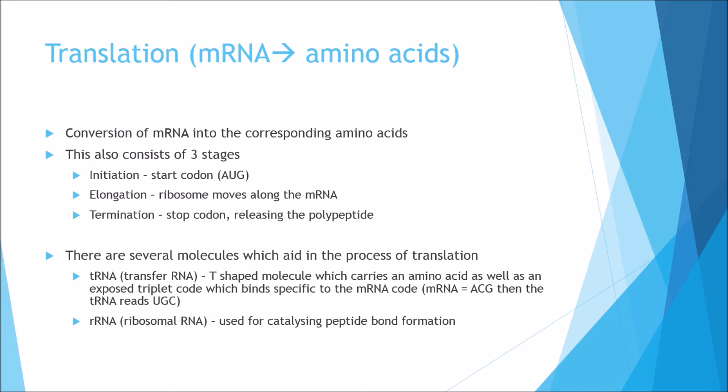Now we translate from messenger RNA into amino acids. The conversion of mRNA into the corresponding amino acids again consists of three stages: initiation, elongation and termination. In initiation, we start with the start codon, which usually consists of the AUG codon. During elongation, the ribosome moves along the mRNA adding on more amino acids as it goes. At termination, we get a stop codon which releases the polypeptide, which can then go on to be further modified.